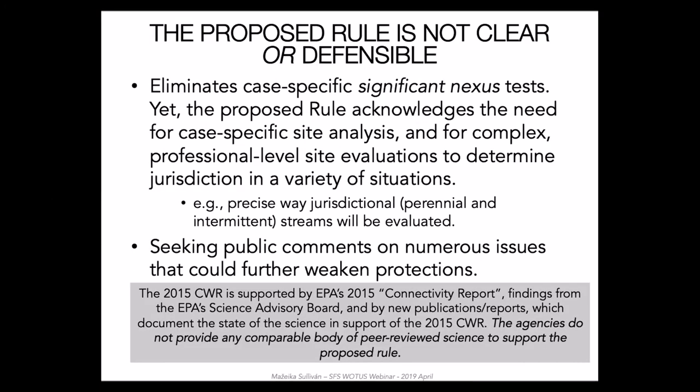The proposed rule relies overly on case law rather than a solid understanding of water body connectivity and the complexity of drainage networks, landscapes, and watershed processes. Further justification for the proposed rule draws on findings from the connectivity report and the SAB review, yet some interpretations of these findings are misleading and taken out of appropriate context. This leads to unsupported recommendations to remove protections for critical components of watersheds, such as ephemeral streams, that can have important downstream effects.